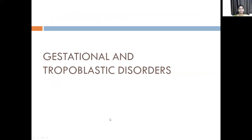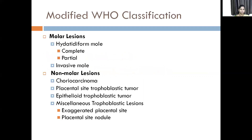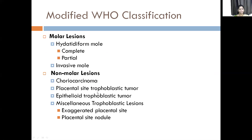Now coming to the gestational trophoblastic diseases. The WHO classification includes molar lesions and non-molar lesions. Among the molar lesions, you have hydatidiform mole — which can be complete or partial — and the invasive mole. In the non-molar lesions, you have choriocarcinoma, placental site trophoblastic tumor (PSTT), epithelioid trophoblastic tumor, and under miscellaneous trophoblastic lesions: exaggerated placental site and placental site nodule.